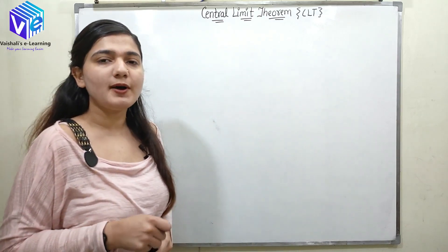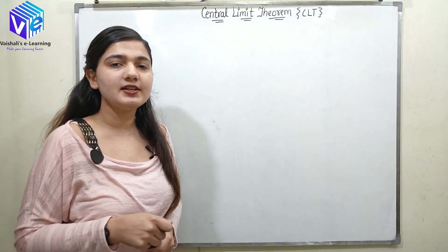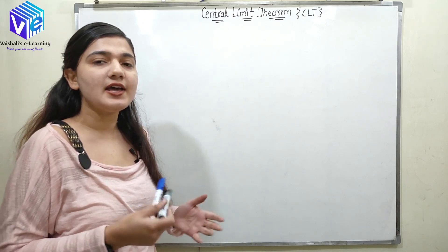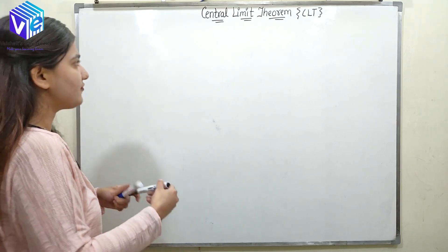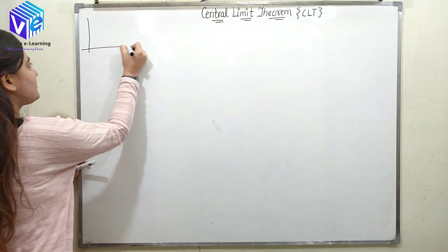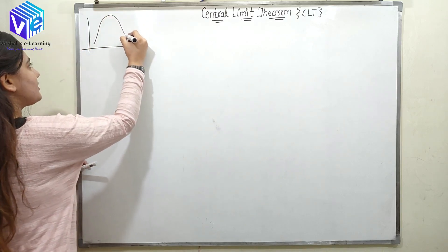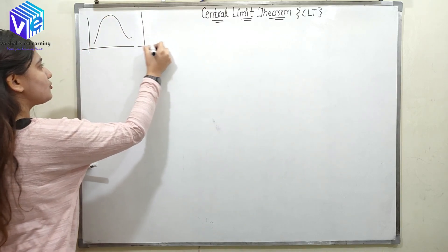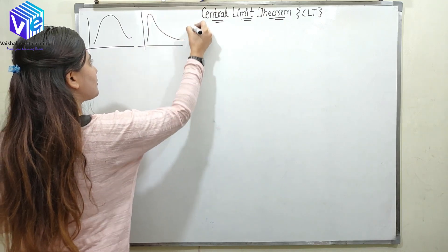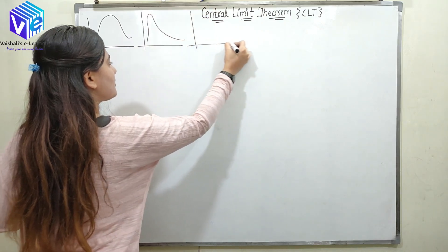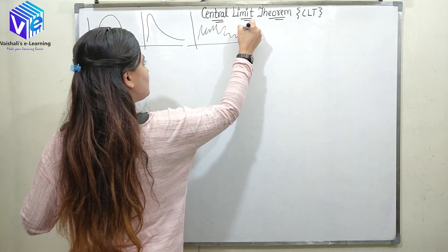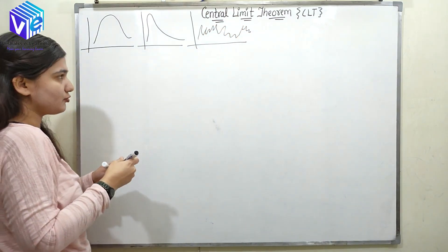The central limit theorem states that if I have any distribution. Let's suppose I have three distributions: the first is a Gaussian distribution, the second is a skewed Gaussian distribution, and the third is a random distribution.